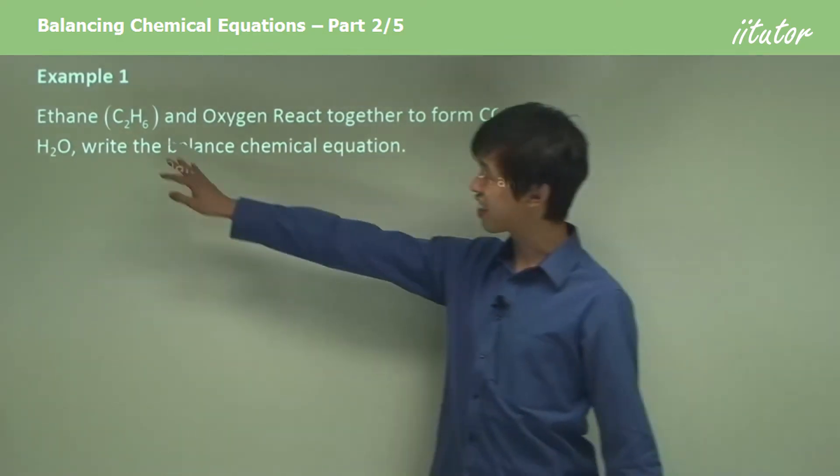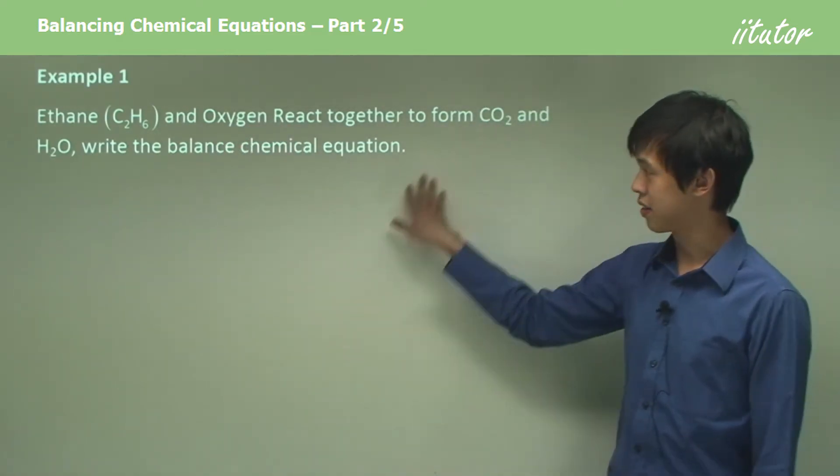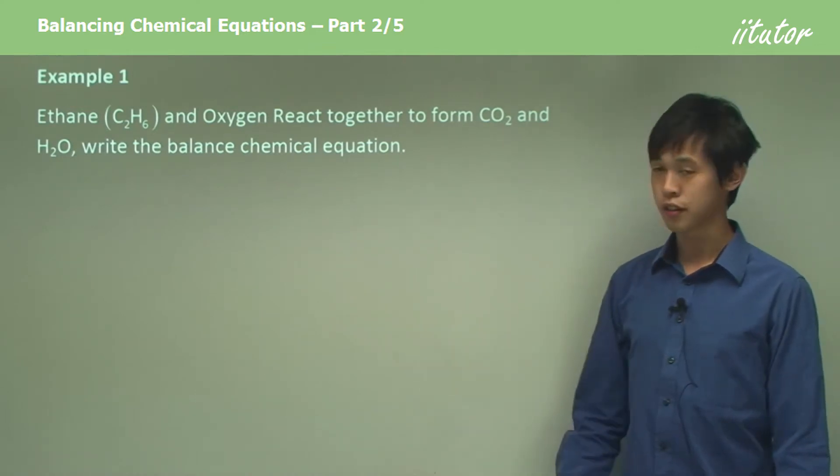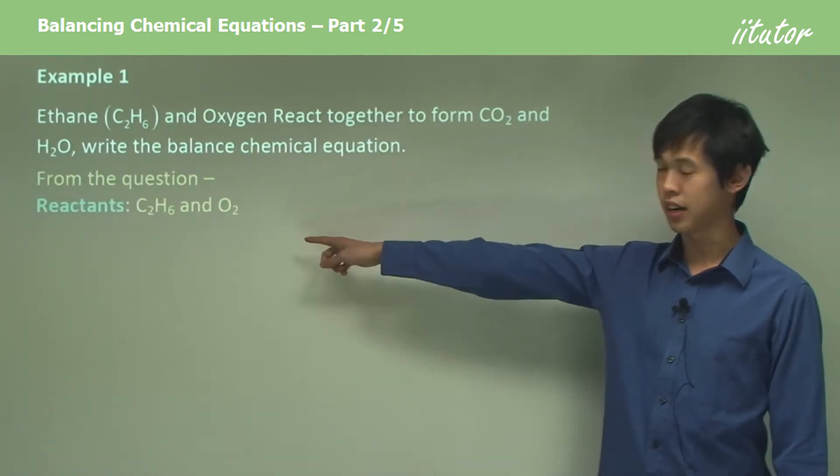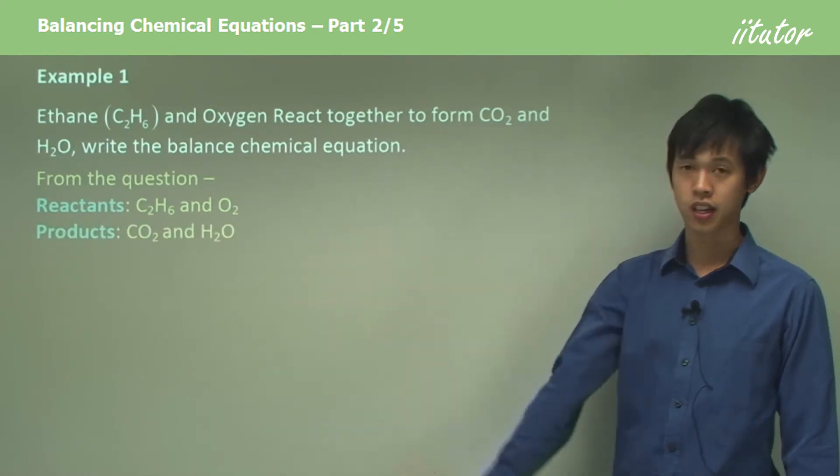We've got this fuel ethane and it reacts with oxygen to give you CO2 and H2O. So we want to write a balanced equation for this. From the question we know that the reactants are C2H6 and O2 and the products are CO2 and H2O.